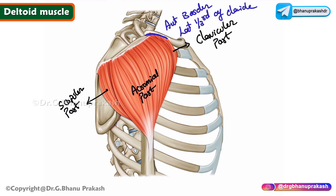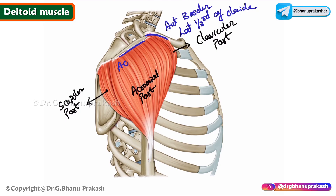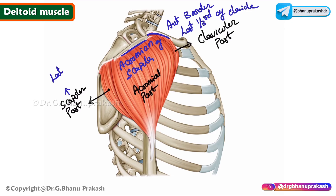The acromial part arises from the lateral margin and superior surface of the acromion of the scapula. The scapular part, or posterior part, originates from the lateral one-third of the spine of the scapula.